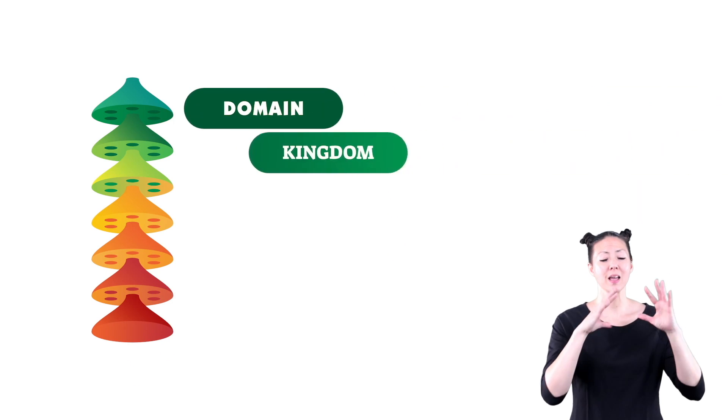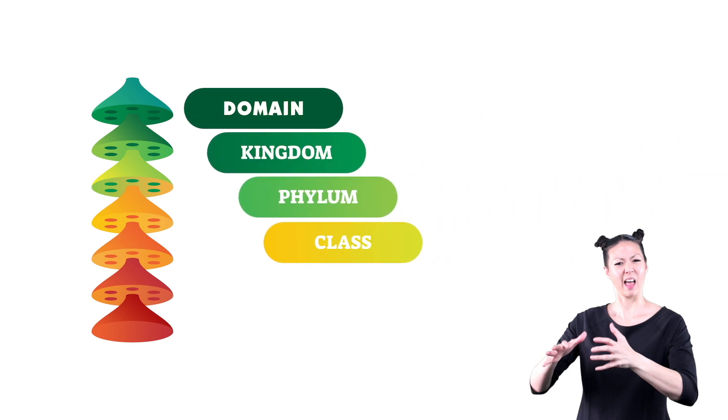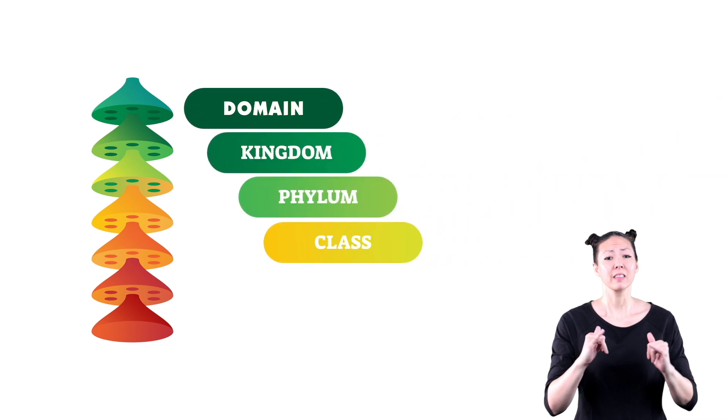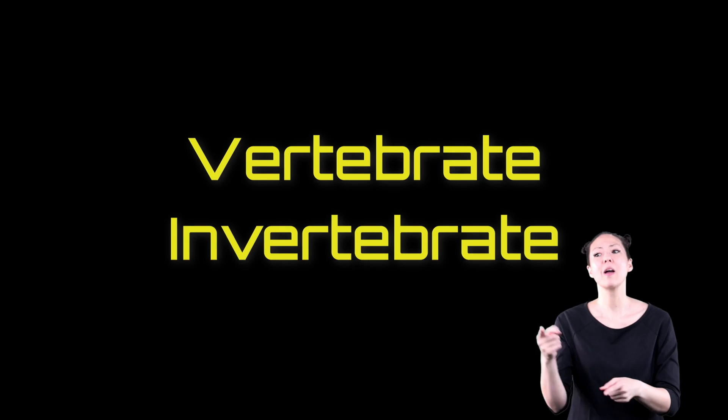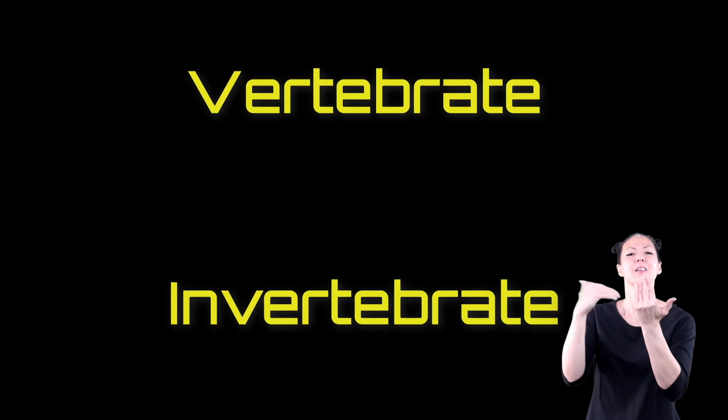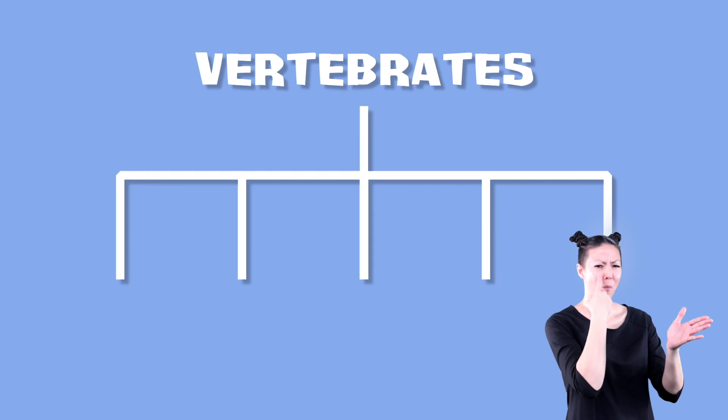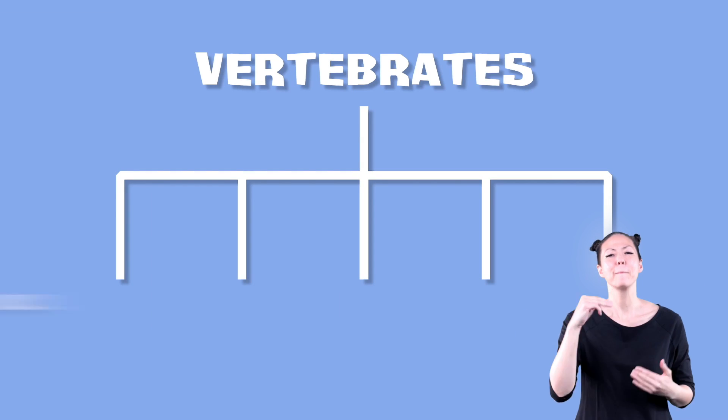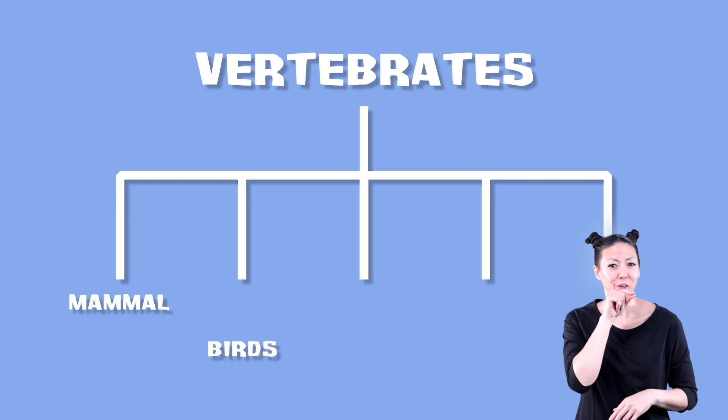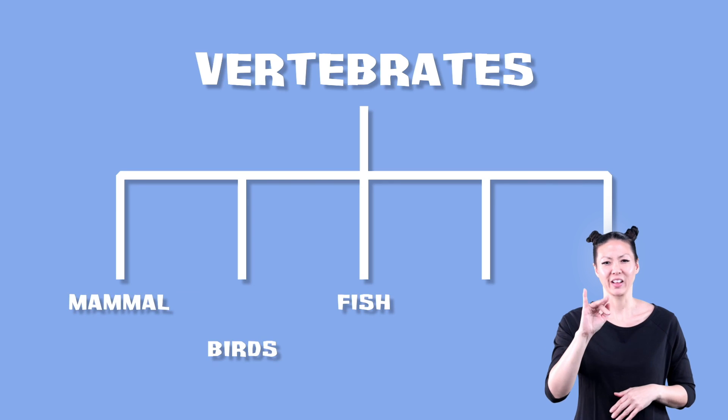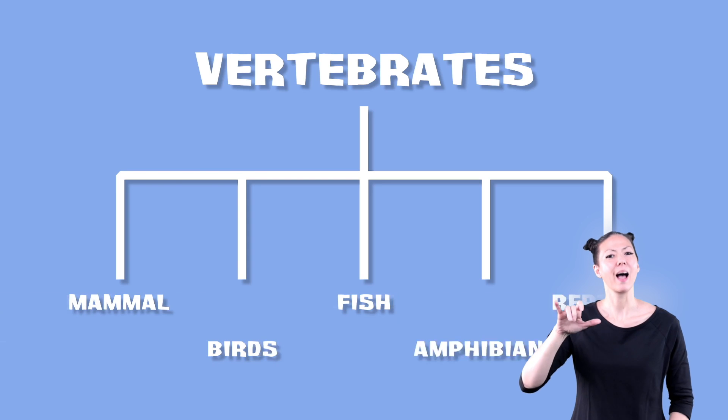The next level in the animal classification chart is class. In this level, invertebrates and vertebrates are separated again. For instance, all the vertebrates are separated into five classes that you will probably recognize: mammals, birds, fish, amphibians, and reptiles.